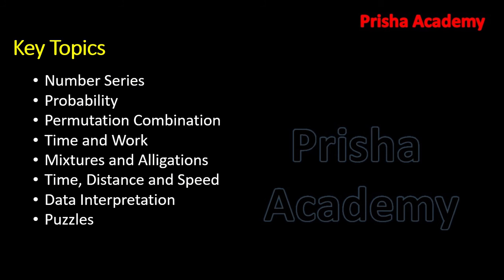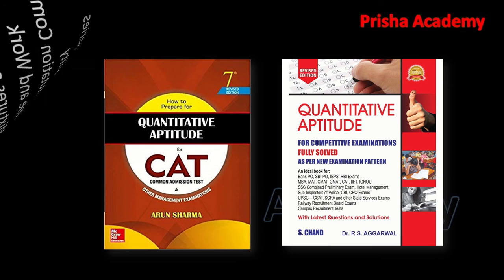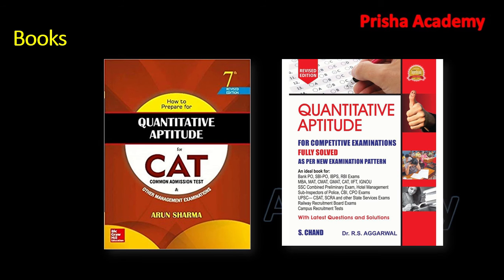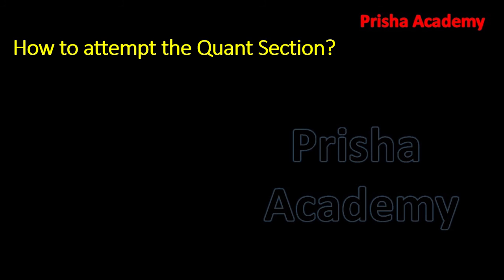You can select any of these topics depending upon your choice. I will suggest two books: one is Quantitative Aptitude by Arun Sharma, and the other is Quantitative Aptitude by RS Agrawal. You can buy these books from Amazon, Flipkart, or from the nearest bookstore. Now, how to attempt the quant section — this is where our strategy starts.